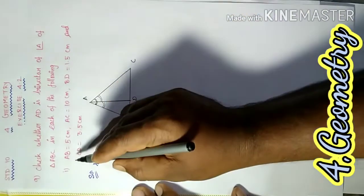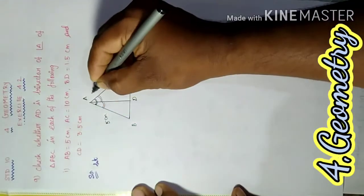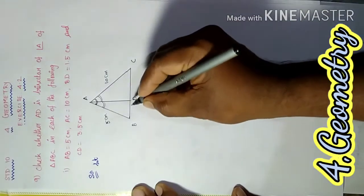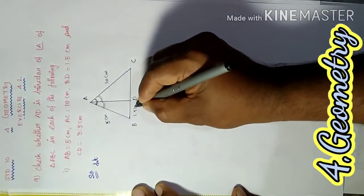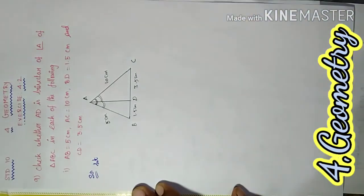So we know AB equals 5 cm, AC equals 10 cm, BD equals 1.5 cm, and DC equals 3.5 cm. Now to solve this problem,